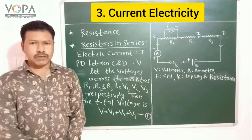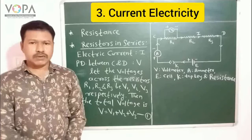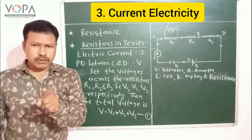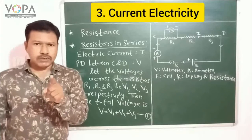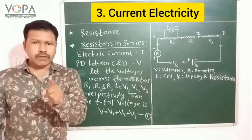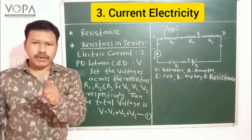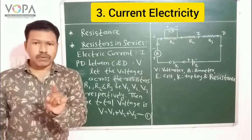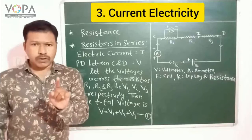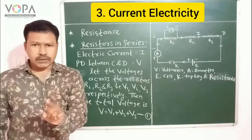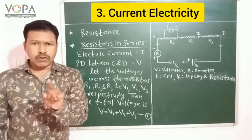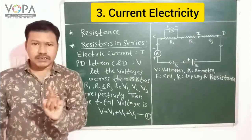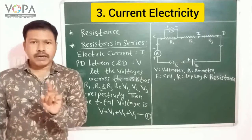The definition of a resistor is an electric device or component which is used in an electric circuit to control the flow of electric current. The property of a conductor to oppose the flow of electric current through it is called its resistance, and resistance is denoted by capital R.